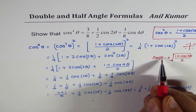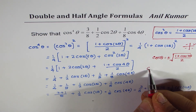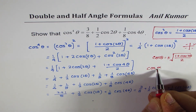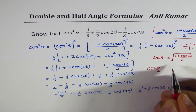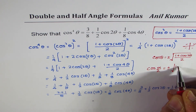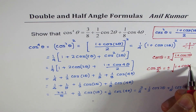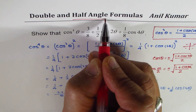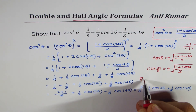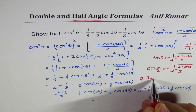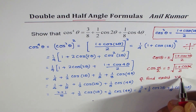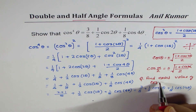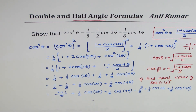If I replace theta with half the angle — say cos(alpha over 2) — then I get the square root of 1 plus cos alpha divided by 2. The formula is now in half angle form. The question for you is: find the exact value of cos of minus 15 degrees. Apply this half angle formula to get the answer. I hope that helps.